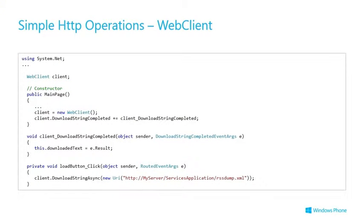Now let's drill down to the code. WebClient first — the simple API, the Windows Phone 7.1 way of doing it. All you do is new one up, hook up an event handler for DownloadStringCompleted, and at some point call the DownloadStringAsync method passing the URI. That string could be an XML file, some JSON, or whatever. When the download is completed the event handler fires and you get at the text.